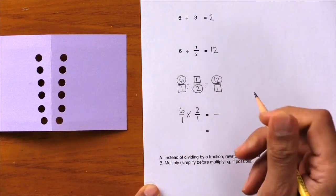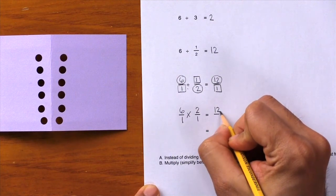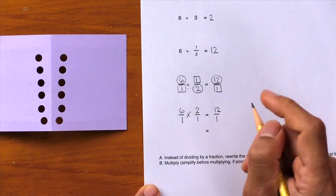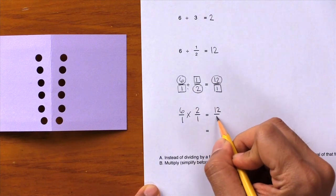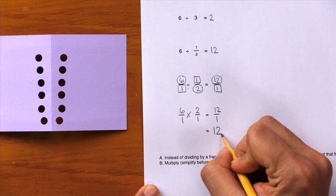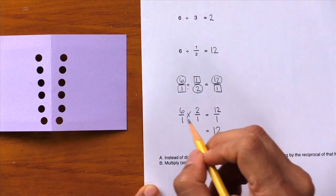Now it just becomes a simple multiplication problem which students are already good at. So here we have six times two—that gives us twelve. One times one gives us one. And what is twelve divided by one? That gives us twelve. And you can see here that that answer is true.